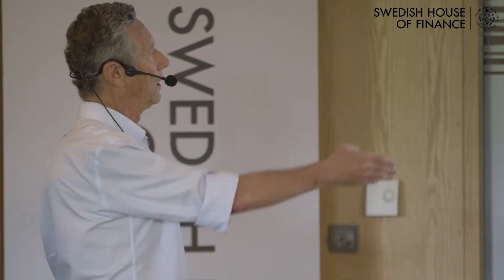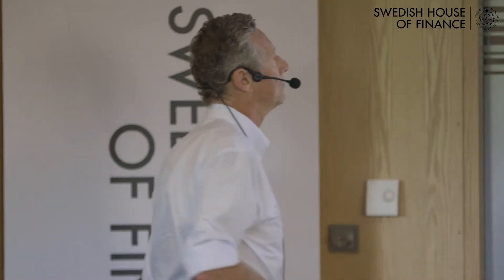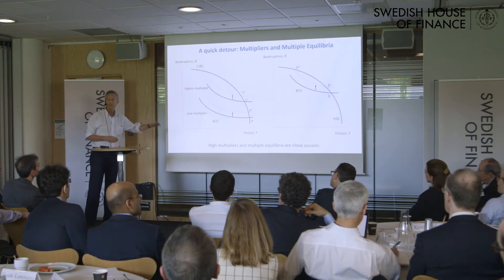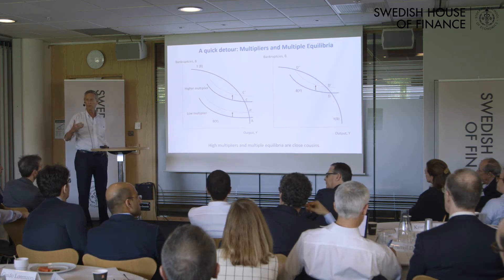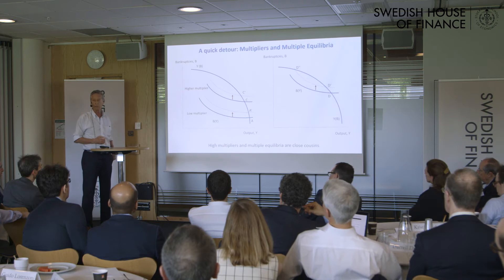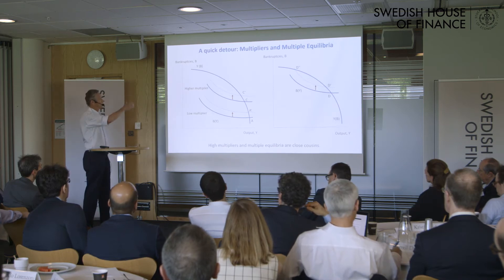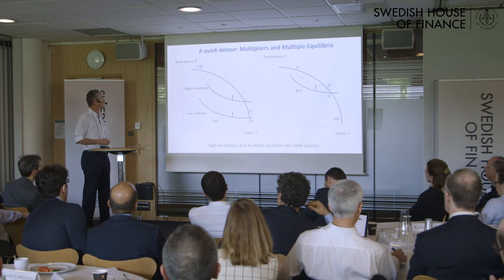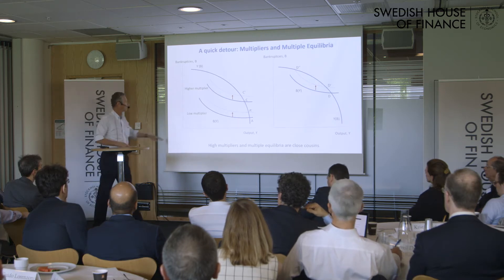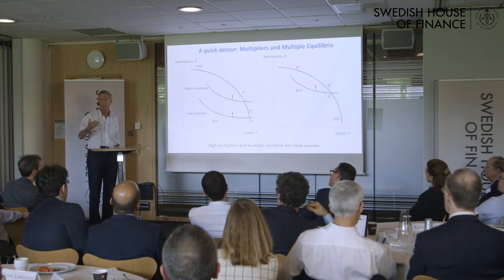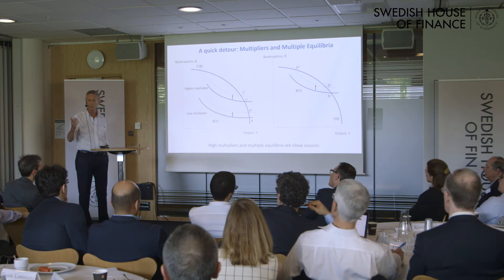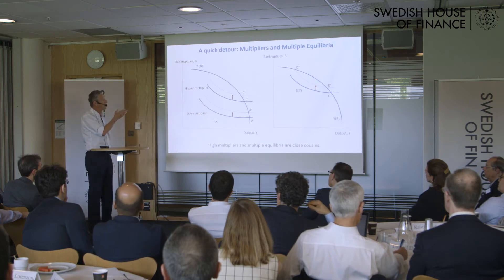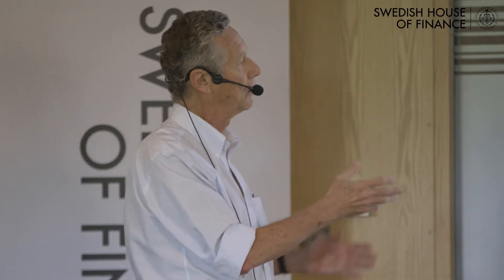Starting with the first graph: a locus like this gives you the reaction of output to bankruptcies. You start with just a few bankruptcies, then the effect on output is small, but as bankruptcies become more and more important, the effect on output is stronger and stronger — therefore the reaction function is concave. The other way: if you start with output and look at the effect on bankruptcies, a few bankruptcies is not a big deal, but when you start getting chains of bankruptcies, the effect on output can be fairly catastrophic — so it is convex.